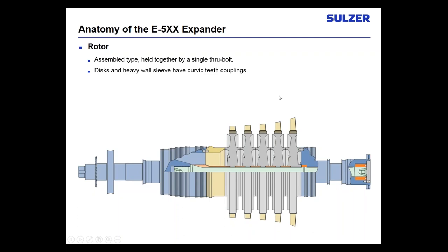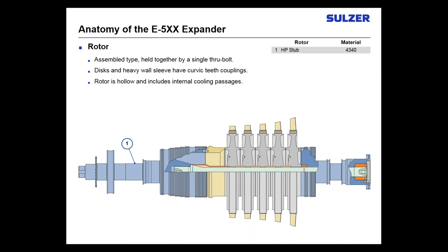Diving into the rotor — the rotor breakdown is very similar to how a gas turbine is built, held together by a single through bolt. This is an assembled, non-integral type rotor. The disc and the heavy wall sleeve use curvic couplings between each disc for connections. These curvic teeth are designed to allow for self-centering when the discs grow during operations. The rotor is actually hollow — like many gas turbines, it uses internal cooling passages to cool the discs. However, there is no internal cooling for the blades; the blades are only externally cooled by air. The main job of the cooling air is to keep the through bolt hole cool so you don't lose the bundle crush.